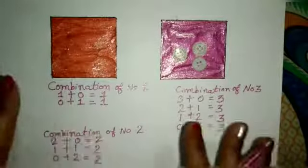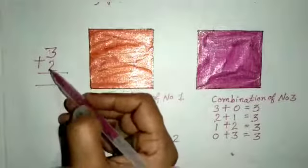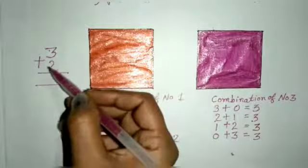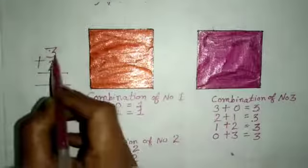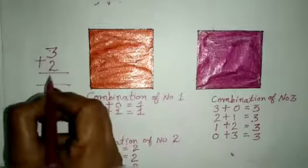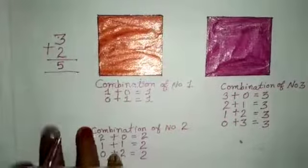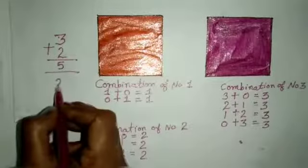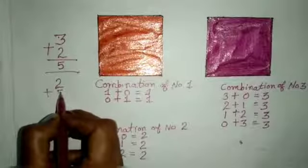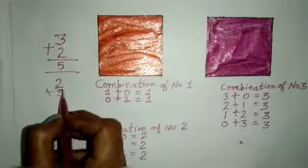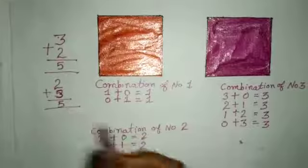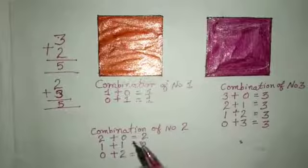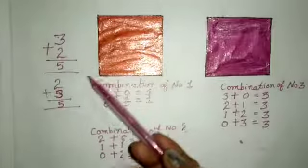I hope you all understood the number combination. When you add two numbers — jab aap two numbers ko add karte ho — if you change the order of the numbers, the answer remains the same. For example, three plus two equal to five. Ab hum yehi numbers ko change karenge: two plus three equal to five. This is number combination.